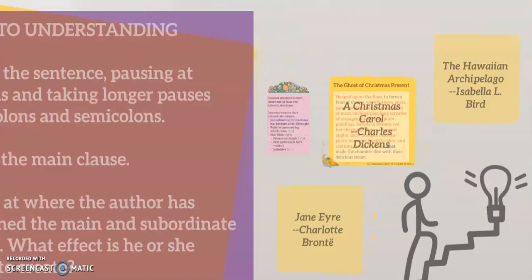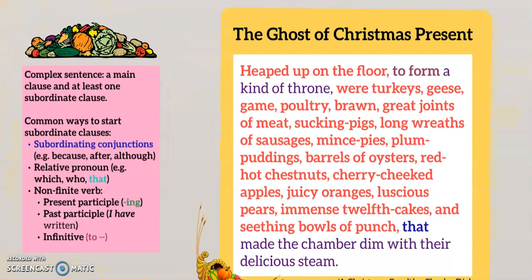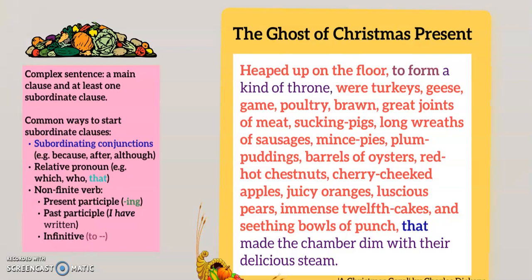Let's look at another example. In our next example, Scrooge meets the ghost of Christmas present. Step one: read the sentence pausing at the commas. We've got quite a lot of commas here to separate items in a list — it's an overwhelming list, deliberately written to create a mood of excitement. 'Heaped upon the floor, to form a kind of throne, were turkeys, geese, game, poultry, brawn, great joints of meat, suckling pigs, long wreaths of sausages, mince pies, plum puddings, barrels of oysters, red-hot chestnuts, cherry-cheeked apples, juicy oranges, luscious pears, immense twelfth cakes and seething bowls of punch. That made the chamber dim with their delicious steam.'